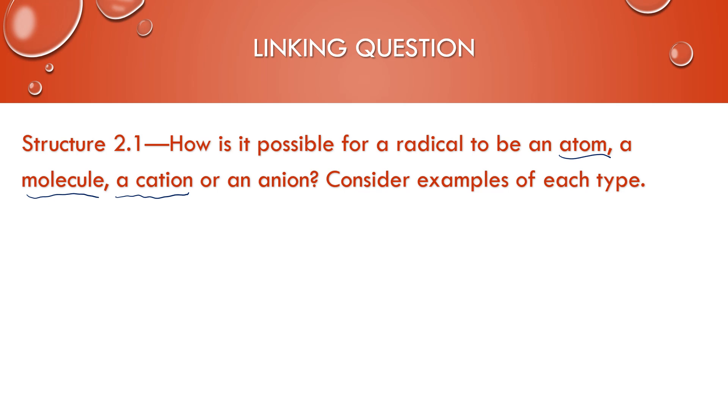For a cation, typically they're going to be losing one electron, like in the formation of a molecular ion. Or if it's an anion, sometimes they can gain a single electron, making all of them have a single unpaired electron.